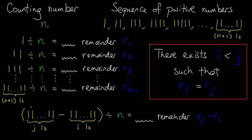Now, take the number that has j ones, minus the number that has i ones. If you take the difference and divide it by n, then the remainder will simply be Rj minus Ri. Because Ri and Rj have the same value, so Rj minus Ri is simply 0.